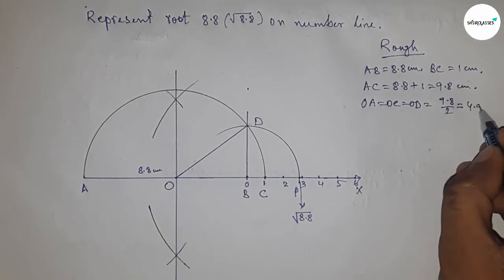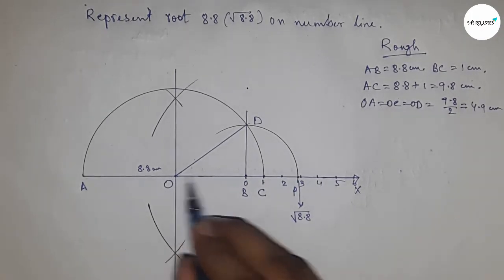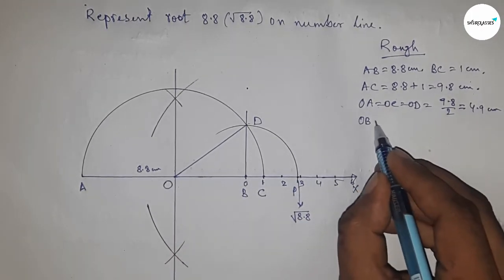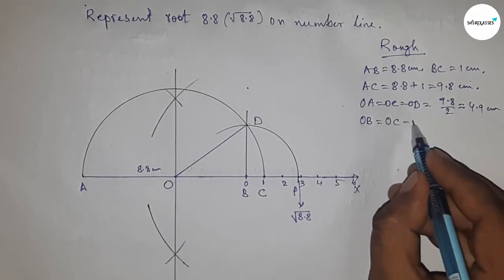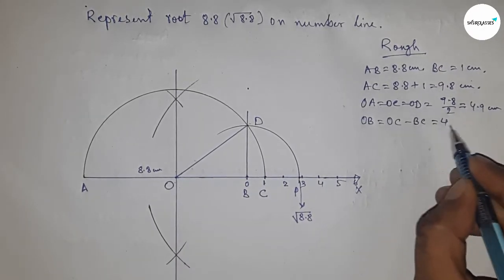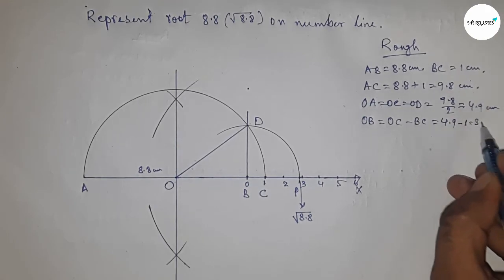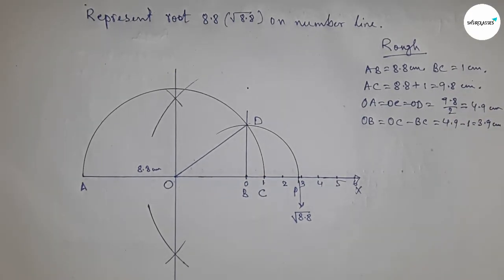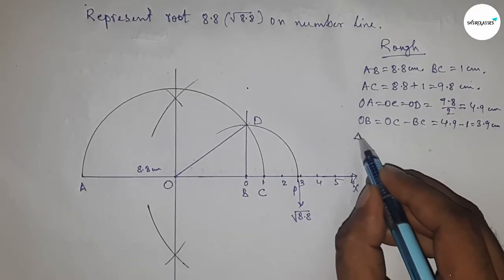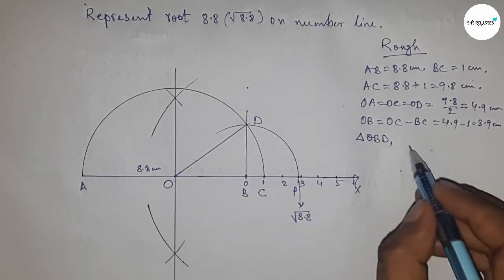Distance OB equals OC minus BC. Putting the values of OC and BC, this is 3.9 cm. From right angle triangle OBD, we can write BD equals, by Pythagoras theorem, root of OD² minus OB².